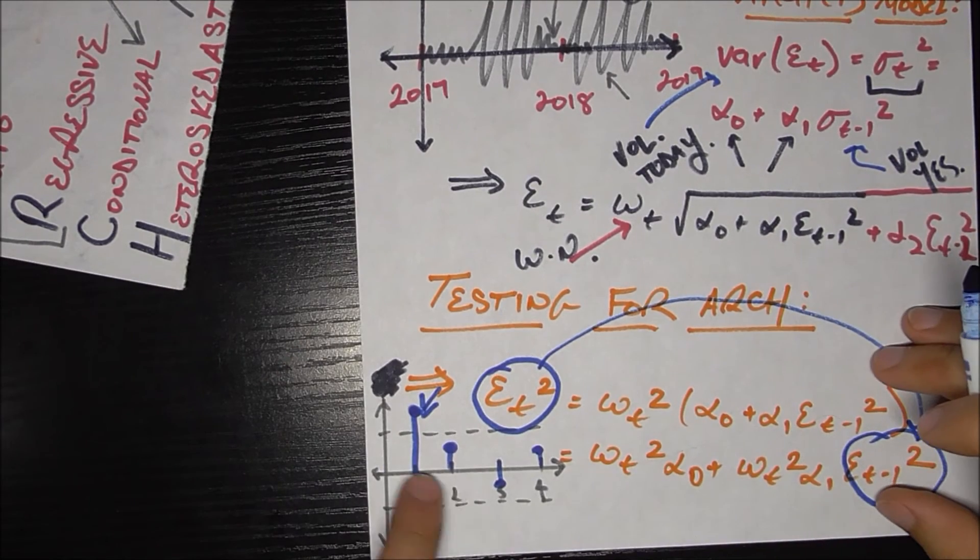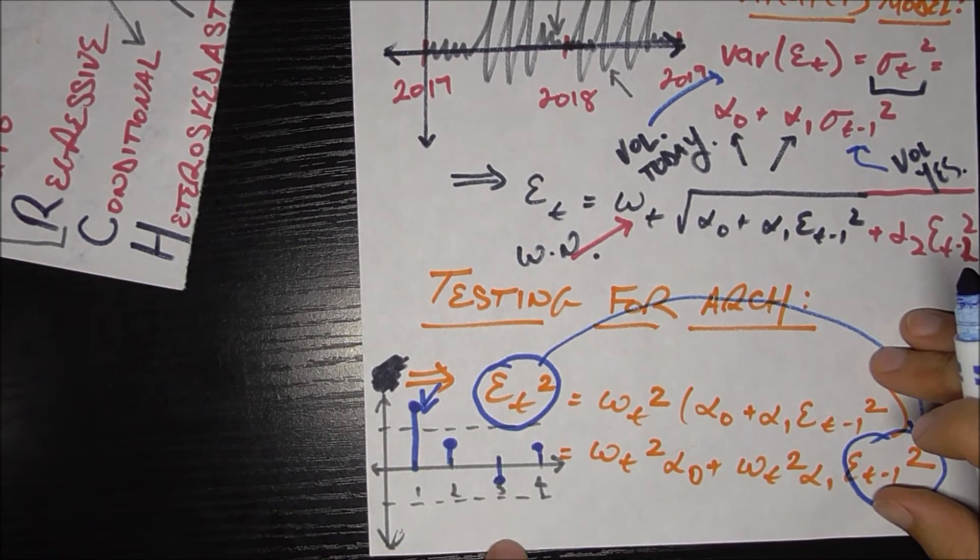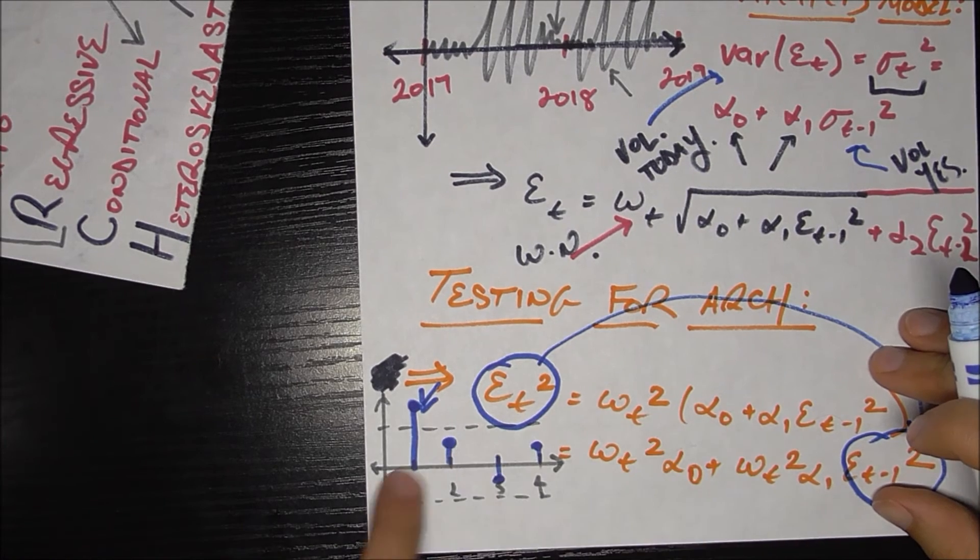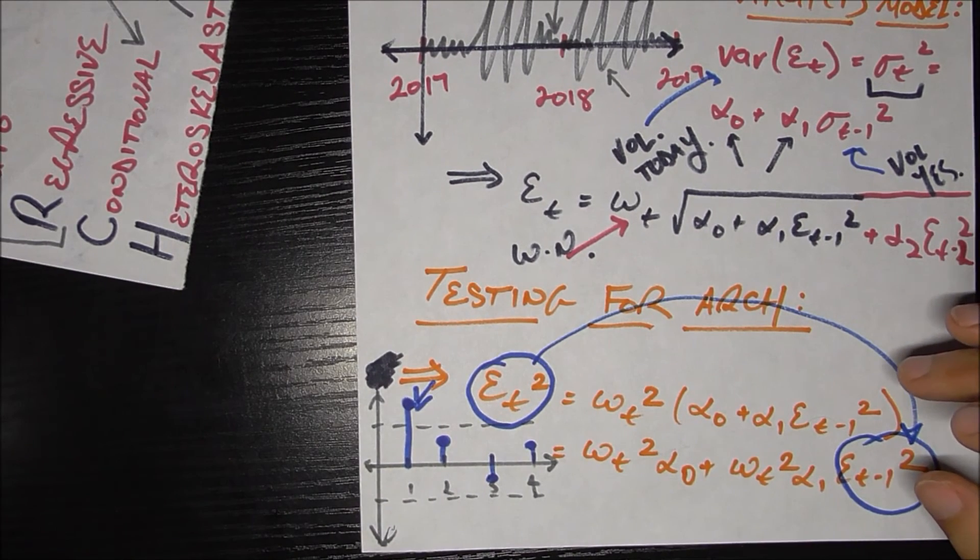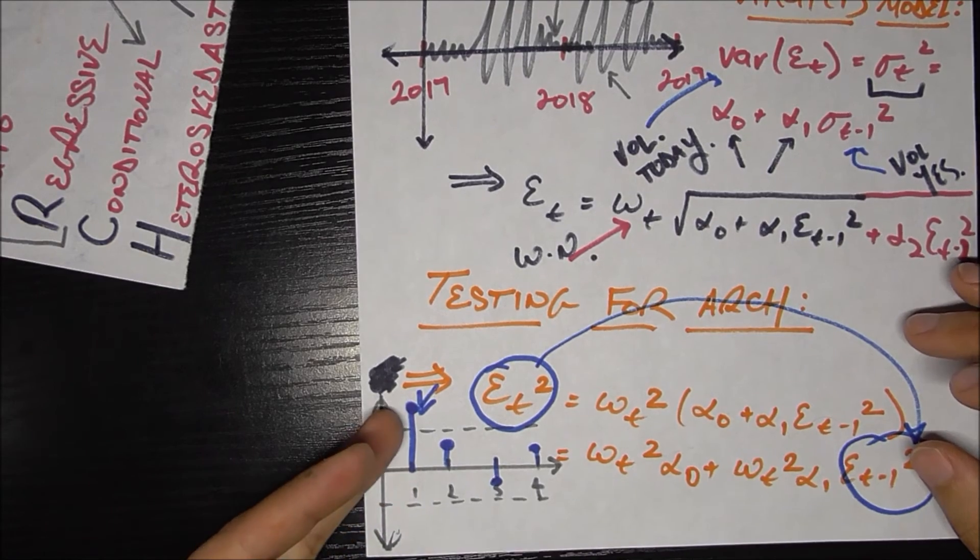If it's an ARCH(2) process, we should also expect this lag at two should be significant, ARCH(3), we could expect lag at three to be significant, so on. But since we're just keeping it simple in ARCH(1), we're just looking for the lag at one to be significant.